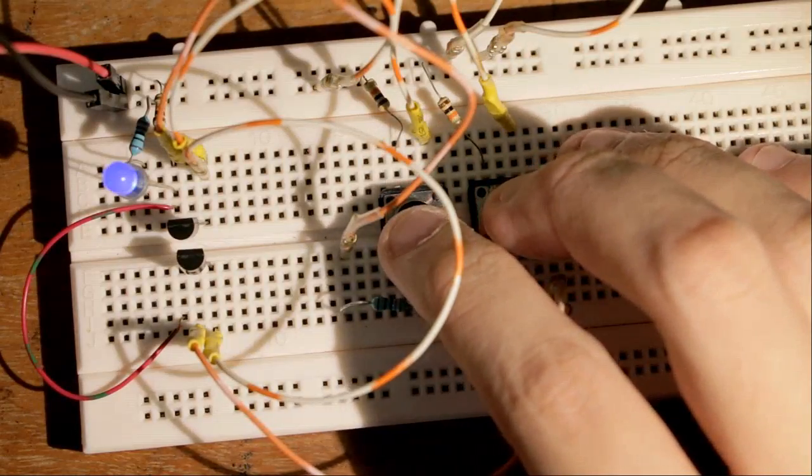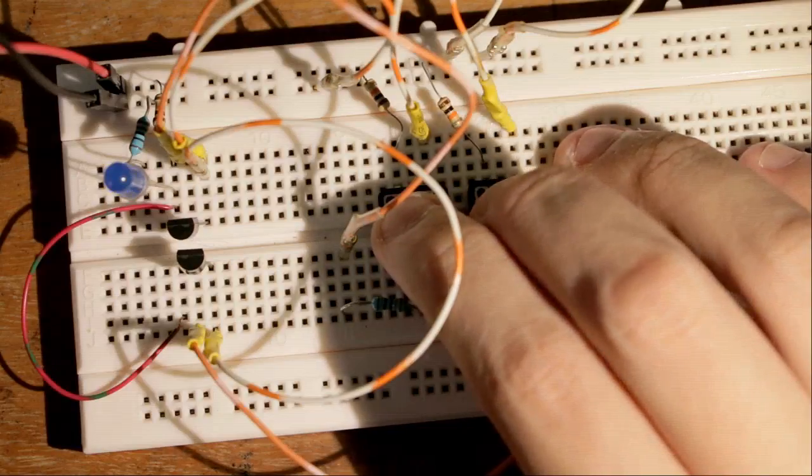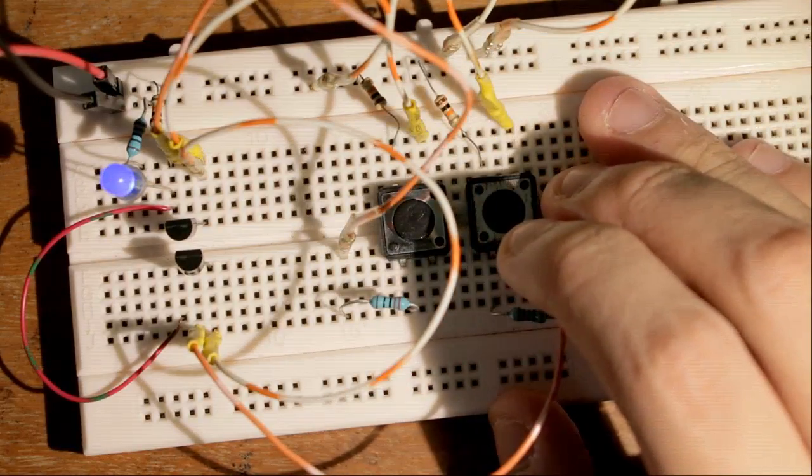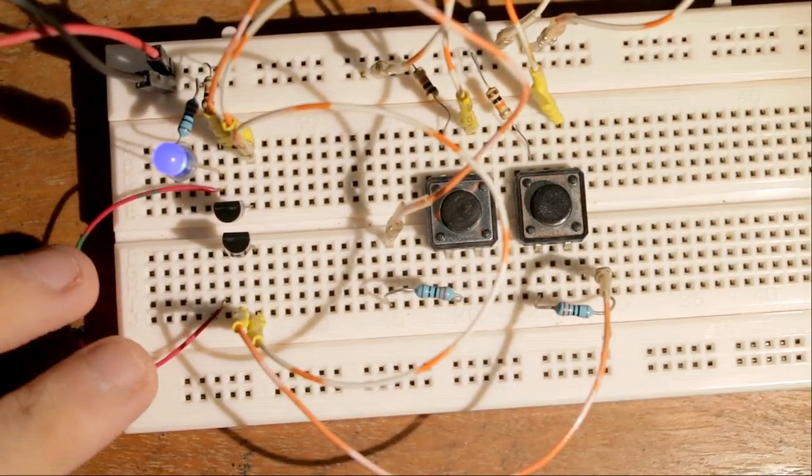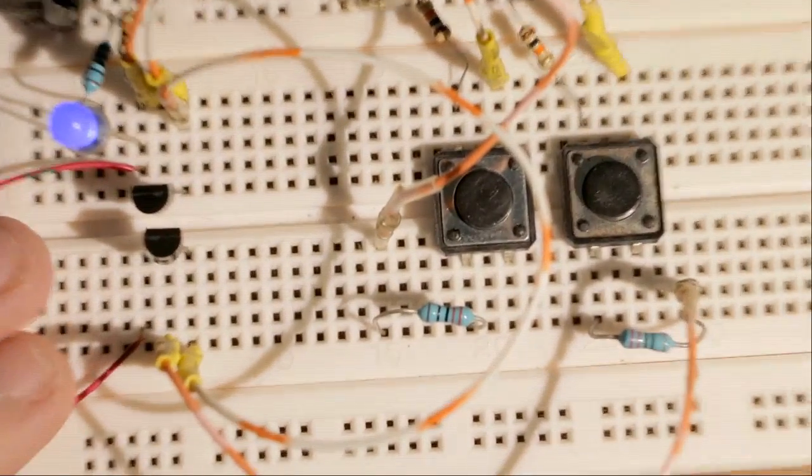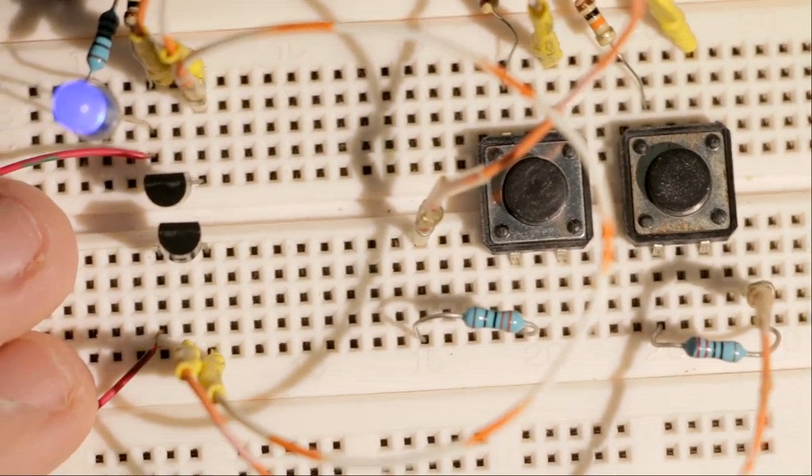So again, your NOR gate using NPN transistors is exactly the same as your AND gate with PNP transistors. So, let's go ahead and zoom in a little bit here, right? You see the actual setup.